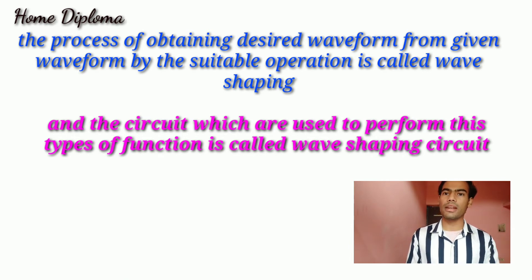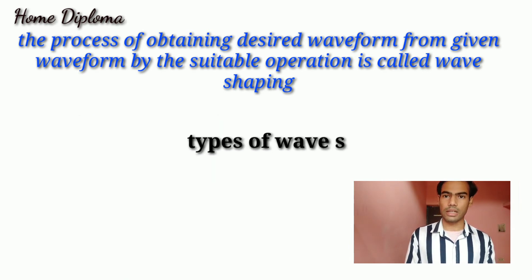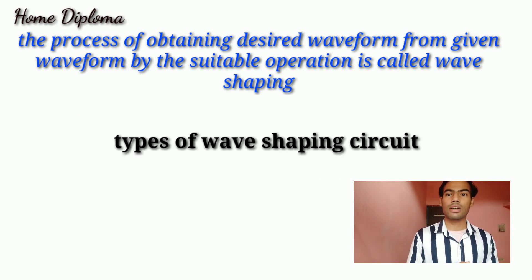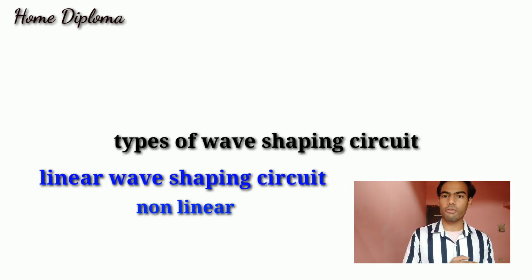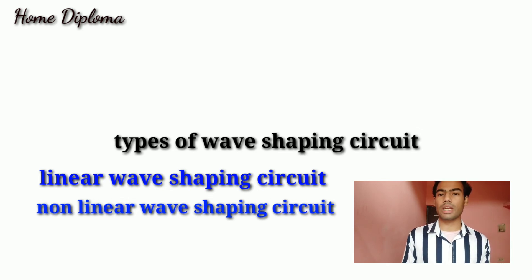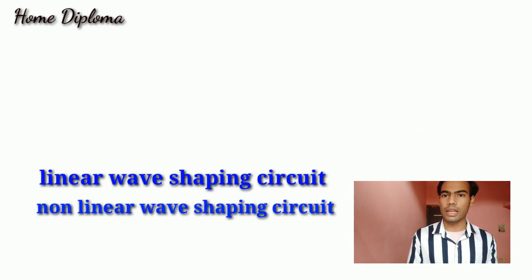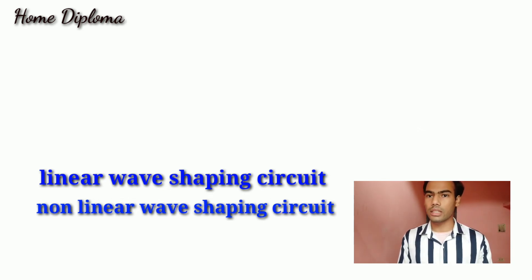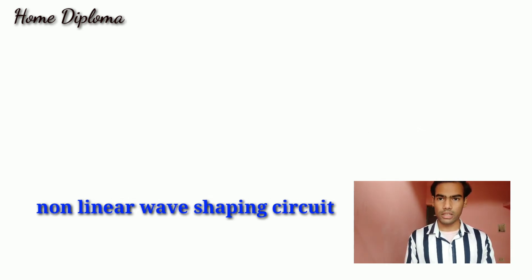There are two main types of wave shaping circuits: linear wave shaping circuit and non-linear wave shaping circuit. In linear wave shaping, there are differentiating circuits, integrating circuits, and too many other types.